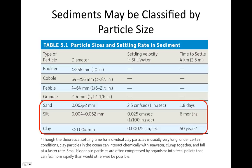Sand ranges between 0.062 to 2 millimeters in diameter. Silt ranges from 0.004 to 0.062 millimeters, and clay is less than 0.004 millimeters — pretty small, especially clay. The settling velocity of these particles in still water decreases as particle size decreases, so the larger the particle, the faster it settles.